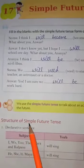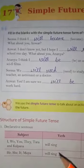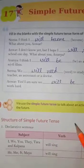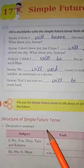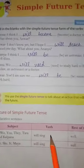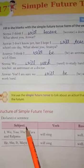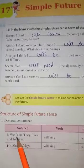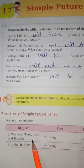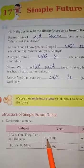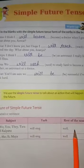The structure of simple future tense — how we write it in different sentences. First is declarative, means assertive statements. Subject is given here, then verb and rest of the sentence. For plural subjects — I, we, you, they, Tara and Kalpana — we use 'will' followed by the first form of the verb and the rest of the sentence.